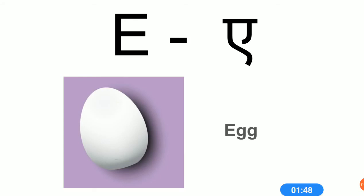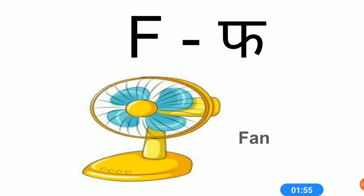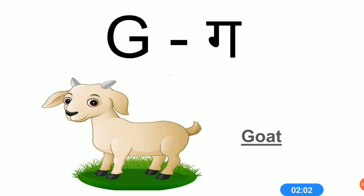E sound is A. E for egg. F sound is F. F for fan. G sound is G. G for god.